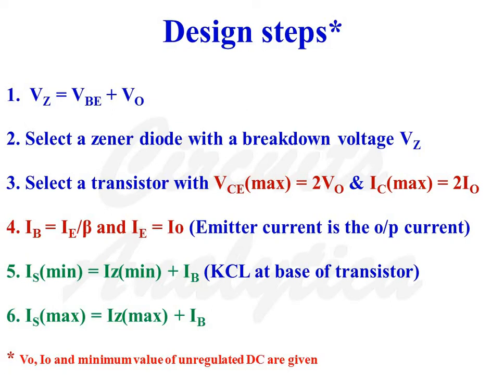The base current IB is equal to IE divided by beta, where IE is equal to the output current I0. The current flowing through the series resistance is given as IS equal to IZ plus IB. IS minimum is equal to IZ minimum plus IB.